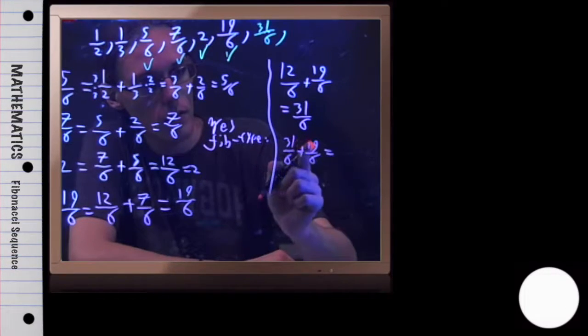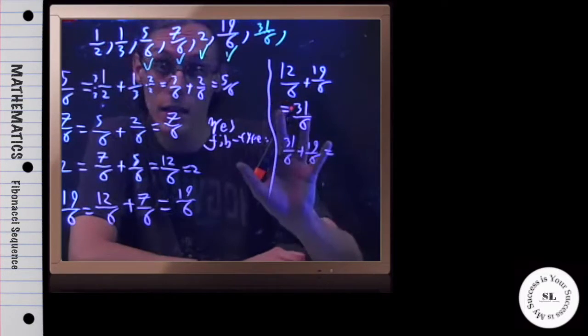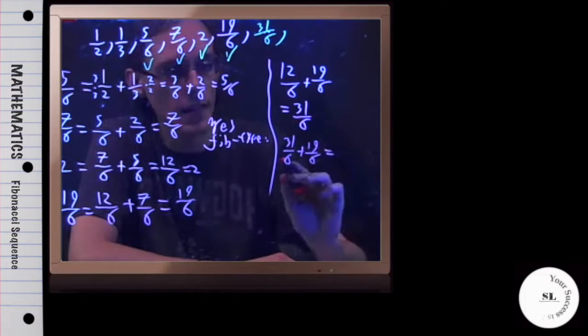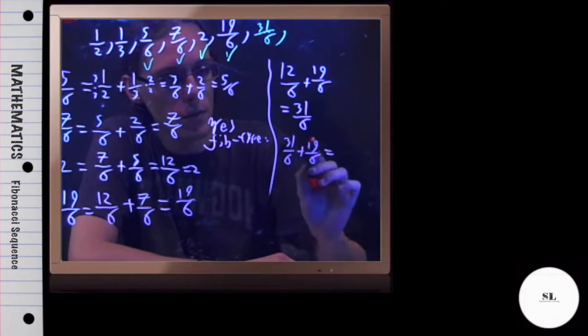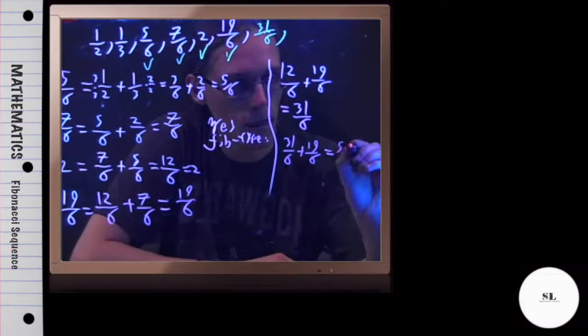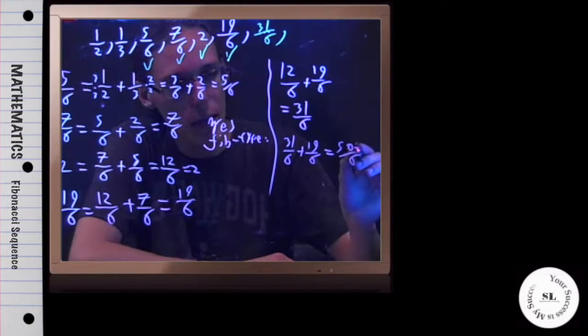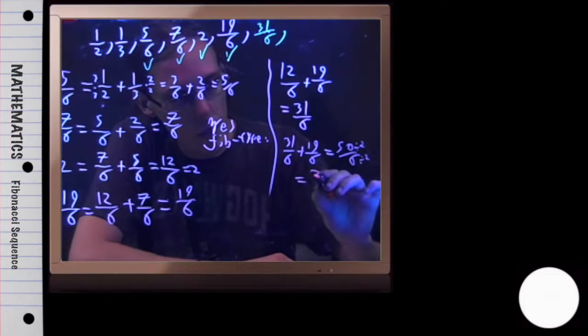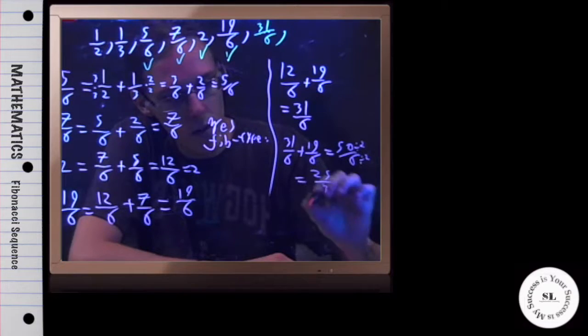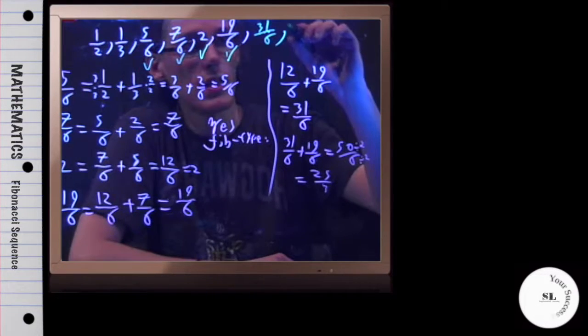This is 31 plus 19. And I'm doing it by adding the 10 and then adding the 9. So 41 plus 9 is 50 over 6. And I can simplify this. I can divide the top and the bottom by 2. And that's giving me 25 over 3. And so that would be the next term.